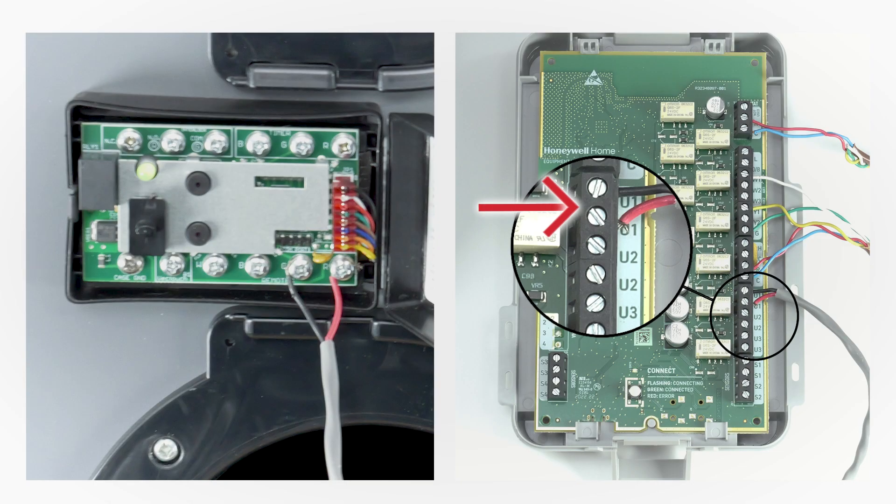You can also wire the T10 Plus to an equipment interface module or an EIM. An EIM makes it easy to control a ventilator from the thermostat when there aren't enough wires to the thermostat. If an EIM is used with the T10 Plus, then you can use the U1, U2, or U3 connections on the EIM.